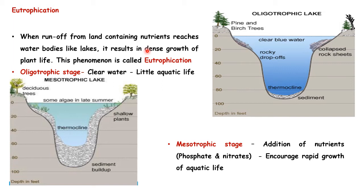You might wonder: you said runoff reaches the aquatic environment and aquatic life grows — so how is eutrophication different? Eutrophication occurs when runoff from agricultural lands and croplands contains an excess amount of nutrients. When that excess amount reaches lakes or ponds, it results in excessive algal growth. The main parameters required for algae to grow are nitrate and phosphate. If the runoff contains too much nitrate and phosphate, it results in too much growth of plant life — that is what we call eutrophication.